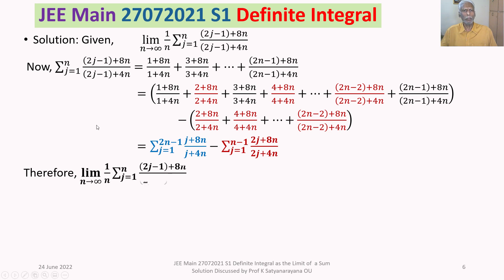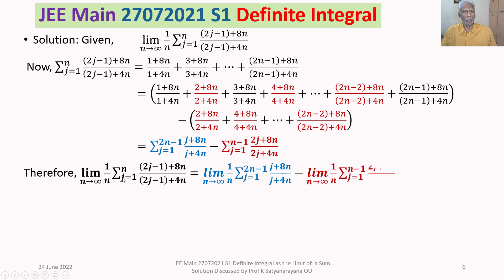Therefore, limit n→∞ of (1/n) sigma j=1 to n of the original expression equals: limit n→∞ of (1/n) times [sigma j=1 to 2n−1 of (j + 8n)/(j + 4n)] minus limit n→∞ of (1/n) times [sigma j=1 to n−1 of (2j + 8n)/(2j + 4n)].